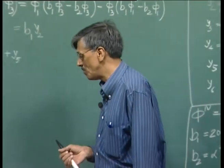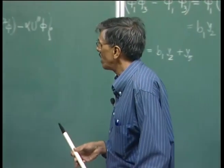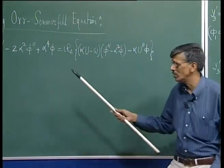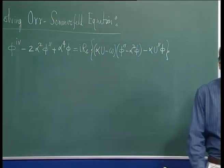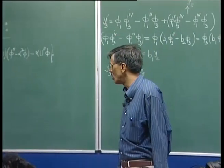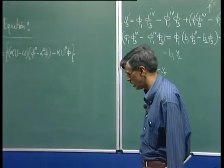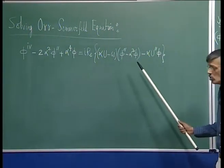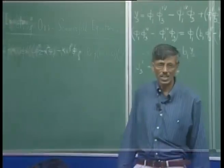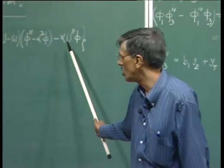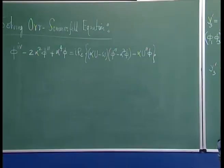Let us begin again, trying to find out a method which will solve the Orr-Sommerfeld equation. We have identified its stiffness in the last few lectures. We also identified a method called the compound matrix method, which involves finding out those modes which satisfy a set of boundary conditions. In the fourth order ODE, you have two boundary conditions at the wall and two in the far stream.